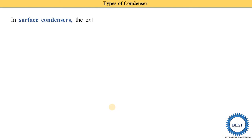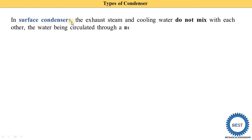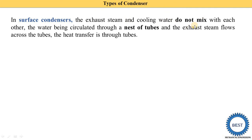Now we understand the surface condenser. In a surface condenser, the exhaust steam and the cooling water do not mix. Earlier, in a jet condenser, the cooling water and steam were mixed — that is called the direct contact type. But in a surface condenser, the exhaust steam and cooling water do not mix with each other. The water is circulated through a nest of tubes, and the exhaust steam flows across the tubes. The heat transfer takes place through the tubes.